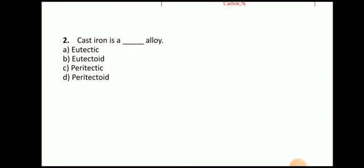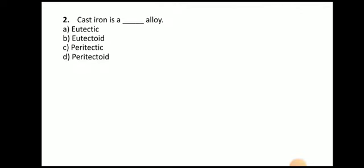Next question: Cast iron is — (A) Alloy, (B) Eutectic, (C) Eutectoid, (D) Peritectic, (E) Peritectoid. The answer is eutectic. So cast iron is a eutectic alloy.